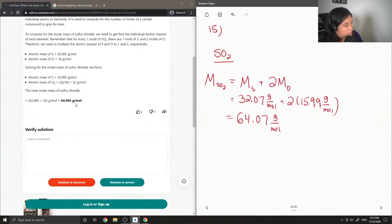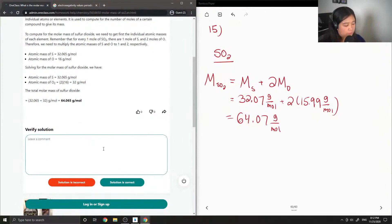Solving for the molar mass of sulfur dioxide, they get 64.065 grams per mole, so this solution is correct. Okay, so I think we have time for one more question.